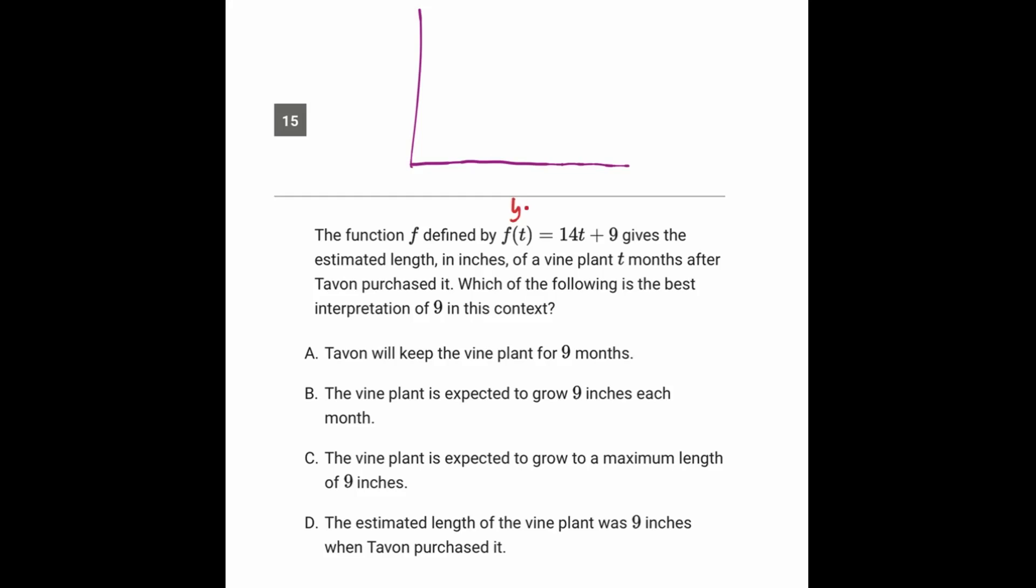Here we have something in y equals mx plus b form. So you can tell that the b, the y-intercept, is 9, and the m is 14. So if we just draw a y-intercept of 9, and then label this with a slope of 14.